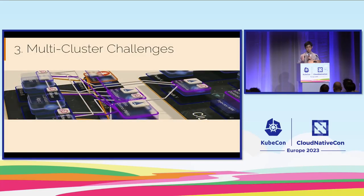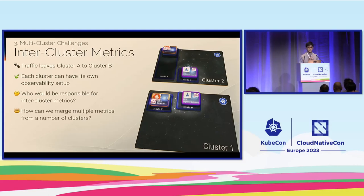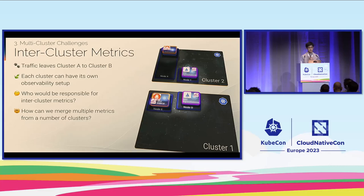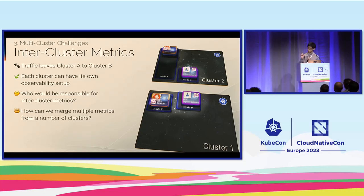Multi-cluster challenges — it's a lot of moving parts, and a few key takeaways. First, inter-cluster metrics. Traffic leaves from cluster A to cluster B, cluster A to cluster C, and so on. Each cluster can have its own observability setup, but who is responsible for inter-cluster metrics? If traffic goes from cluster A to cluster B, is that cluster A's problem or cluster B's? Who gathers the data? And how do we merge multiple metrics from a number of clusters — if you have 10 or hundreds of clusters, how do you use them in a meaningful way?